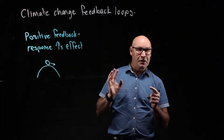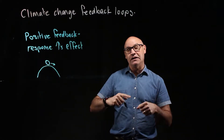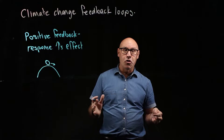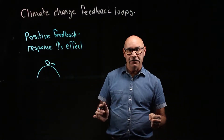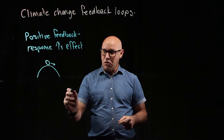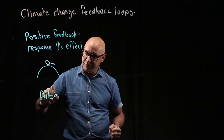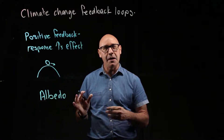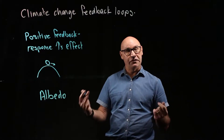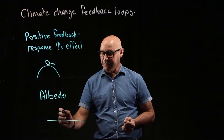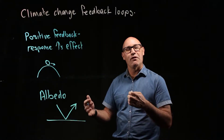I want to explain a couple of positive feedback loops that have the potential of accelerating global warming and climate change. The first one is related to an effect called albedo.